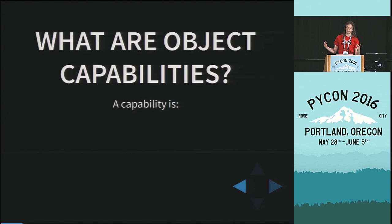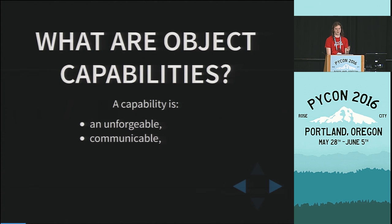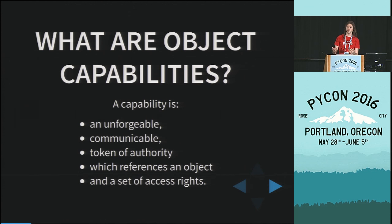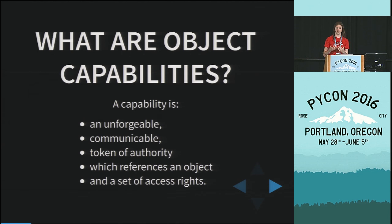So what is an object capability? A capability is an unforgeable, communicable token of authority, which references an object and a set of access rights. So a capability is a handle to something that you have authority to interact with, that you couldn't have come up with on your own, and that also has some interface that you can invoke some methods on.